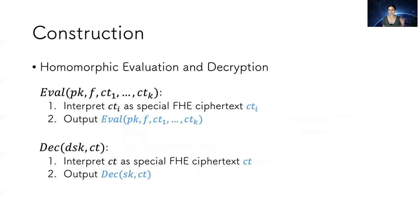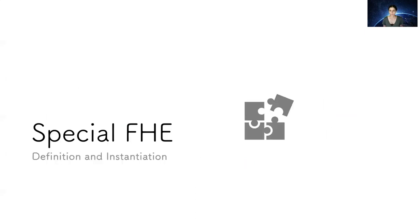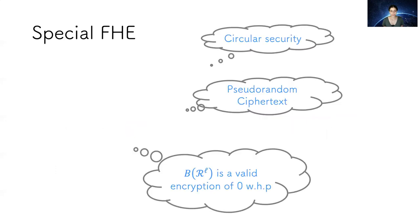Observe that the output of the encryption is just a ciphertext of the special FHE. So Evaluate and Decrypt are the same as in the special FHE. What do we need from this special FHE? We need circular security, pseudorandom ciphertext, and the property that bootstrapping of a random element from the ciphertext space is a valid encryption of zero with high probability.